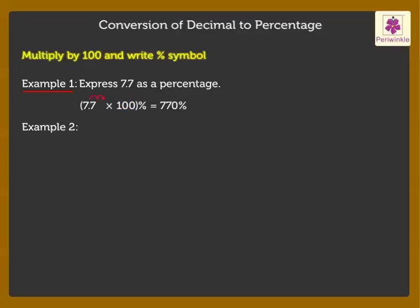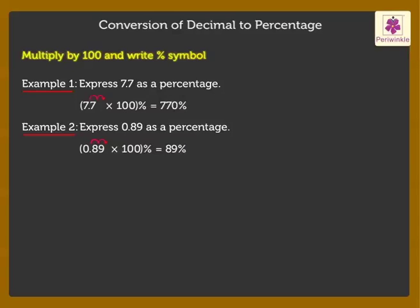Now let's solve one more example. Express 0.89 as a percentage. Here, multiply 0.89 by 100 and write the percentage symbol, which is equal to 89%.